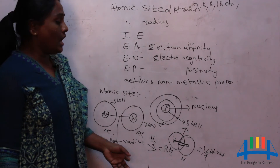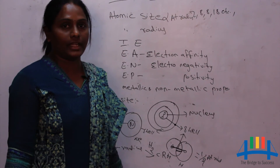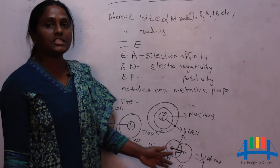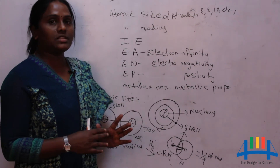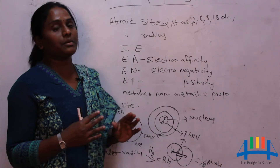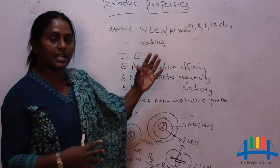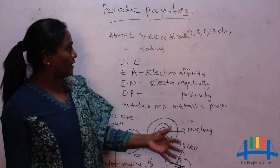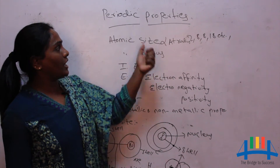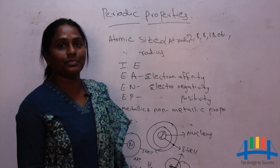One more is called the metallic radius. It is also half of the distance between the nuclei of two metal atoms that are present in a metallic crystal. These are the three types of atomic radius we study in periodic properties. With this I will end my topic.